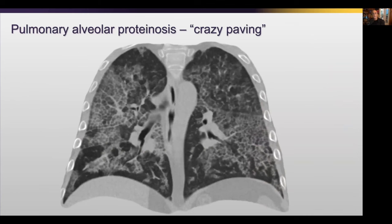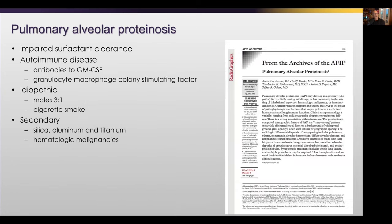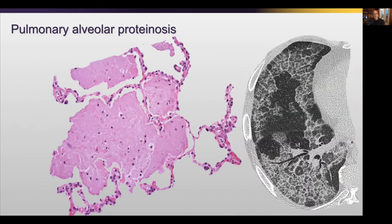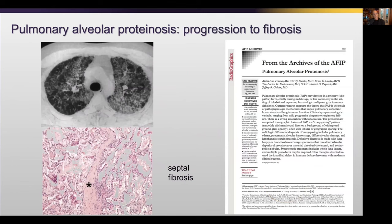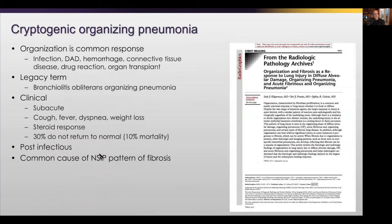Classic pulmonary alveolar proteinosis shows a crazy paving pattern with a wide differential including infection, hemorrhage, and diffuse alveolar damage, but this is a case of PAP. These patients have a paucity of granulocyte-macrophage colony-stimulating factor; their macrophages don't work well, resulting in too much surfactant-like material. This material increases lymphatic flow, and fluid within the intralobular septa produces the crazy paving pattern. If pulmonary alveolar proteinosis persists for a long time, however, there is progression to fibrosis, and the intralobular septum becomes fibrotic.